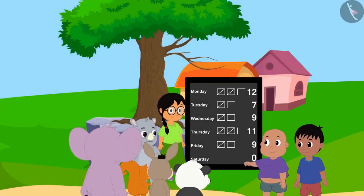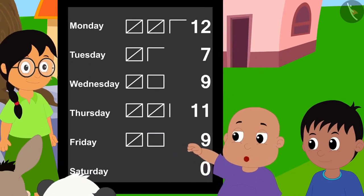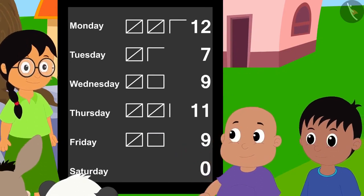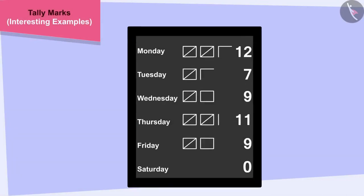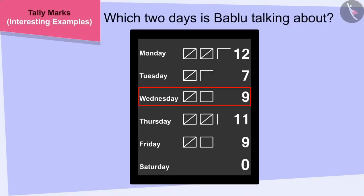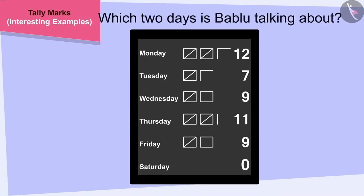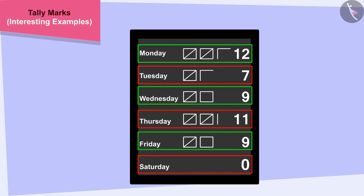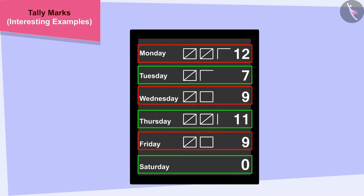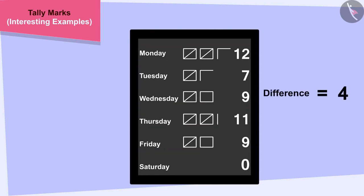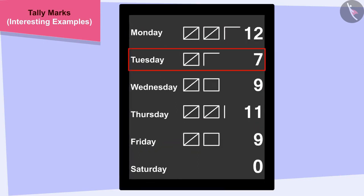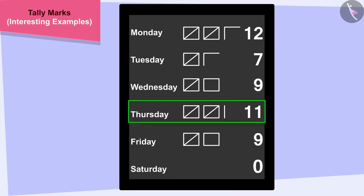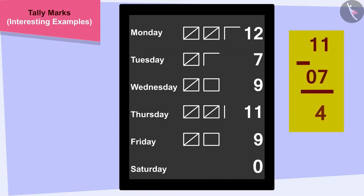Yes, Raju, and look — on this day, four more hours of work were completed than this day, Babalu told Raju. Children, can you tell which two days Babalu is talking about? We have to find two days where the difference in hours is four. Seven hours were completed on Tuesday and 11 hours on Thursday, which is four more than seven. So, Babalu is talking about Tuesday and Thursday.